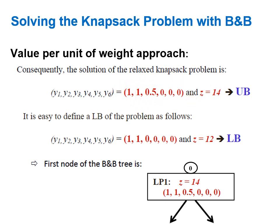Using this solution we can obtain an integer solution easily. With the greedy approach for the knapsack relaxation you will always have at most one fractional variable — some variables equal to one, some equal to zero, and only one fractional. If we round the fractional variable y3 down to zero, the remaining variables y1 and y2 equal to one still satisfy the weight capacity, giving a feasible integer solution.